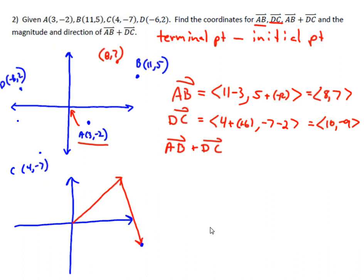AB and then DC is going to look like this. The nice thing is, calculation-wise, all you're doing is adding up the X's and the Y's. 8 plus 10 is 18, 7 plus negative 9 is negative 2. So the coordinates of this new vector, the resultant vector, are <18, -2>.